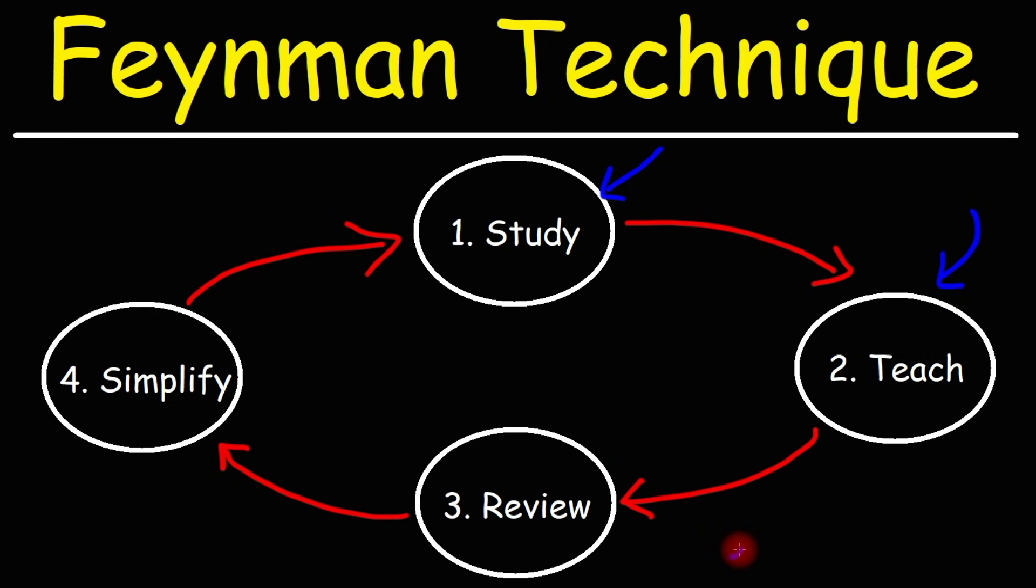Now, the third step of the Feynman technique is to identify gaps in your understanding. After you try explaining the subject to yourself or someone else in step two, chances are you're going to pick up on some gaps in your understanding that you didn't know were there the first time you learned the material. Once that happens, you want to go back and review the subject a second time to fill those gaps that you've identified.